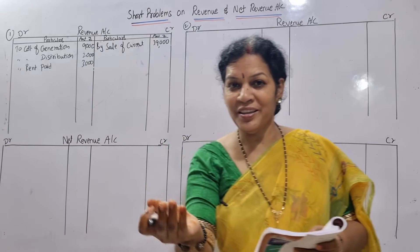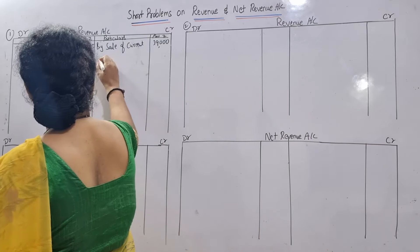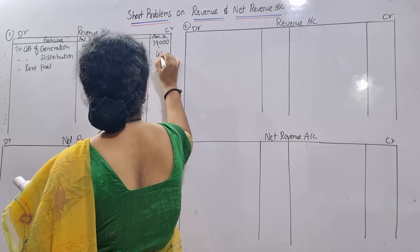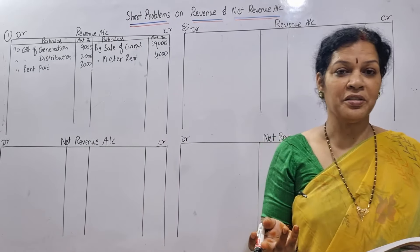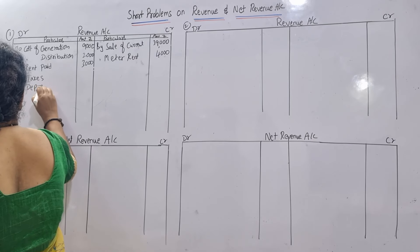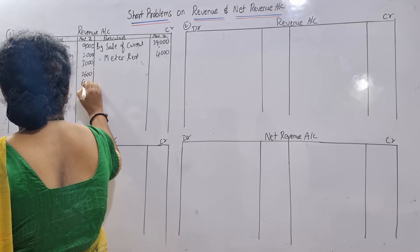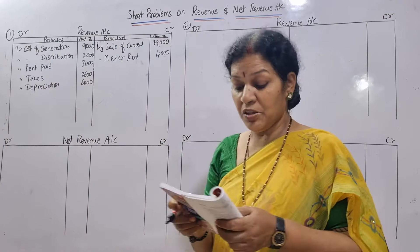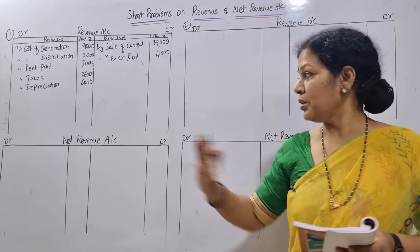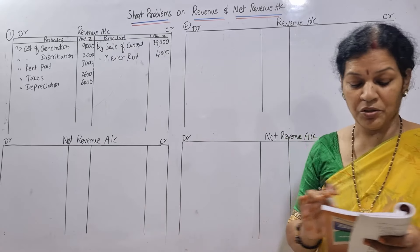Meter rent - on the meter we are getting rent, the electricity company is getting rent, so this is an income. Credit side: by meter rent, 4,000. Taxes and depreciation are both expenses, debit side - taxes 2,600 and depreciation 6,000. Now interest on debentures - whenever you get interest or dividend, it comes under the net revenue account. Here it comes on the debit side - you are paying it. Unless they say you are receiving it, we cannot assume it is income.